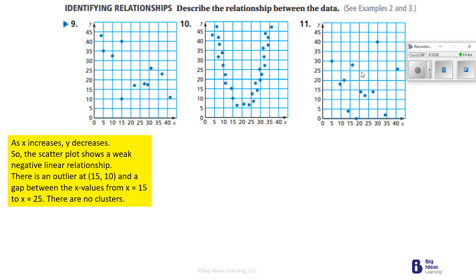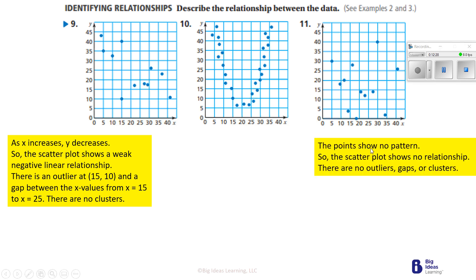On number 11, I would call this no association — it's all over the place. I don't see it getting consistently bigger or smaller. You could argue either way, but I'm going to go with no association at all. The points show no pattern, so the scatter plot shows no relationship. There are no outliers, gaps, or clusters — just no association.